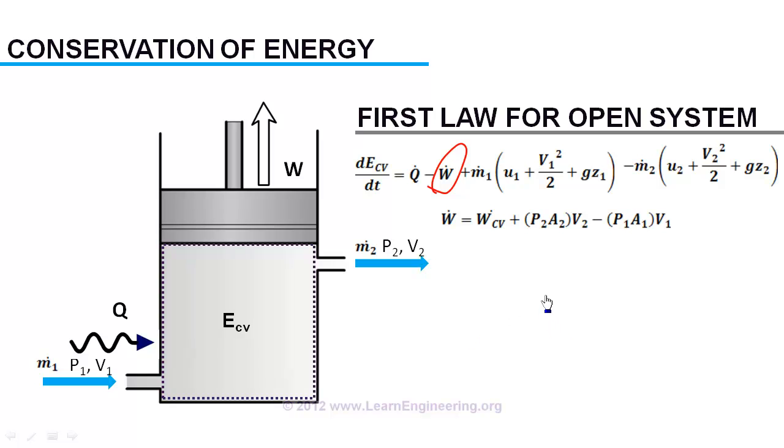If you do some rearrangement to the equation by substituting the volumetric flow rate as mass flow in specific volume and by representing U plus PV as a new property, the enthalpy, the above equation will be simplified like this.